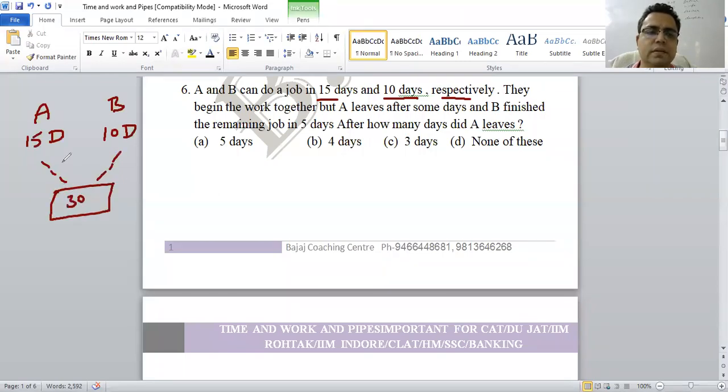A and B can do the job as a team. They begin to work together, but A leaves after some day. We don't know how many days after they leave. And B finished the remaining job in 5 days. If A went then B will work 5 days. Now, what do you ask? After how many days did A leave?